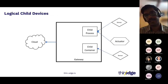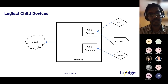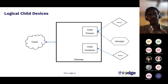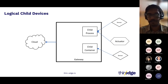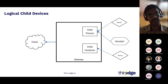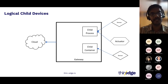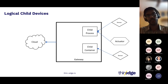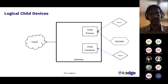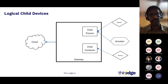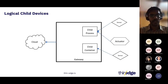The final flavor is logical child devices. These are basically not always physical child devices — they can be processes or containers running on the same gateway device itself, acting as child devices in the cloud. They may or may not be connected to further sensors and actuators, but these are just logical processes running on the gateway and appearing as child devices in the cloud.